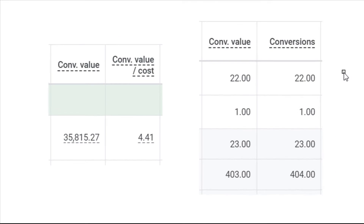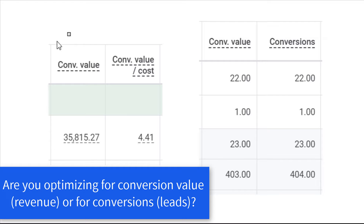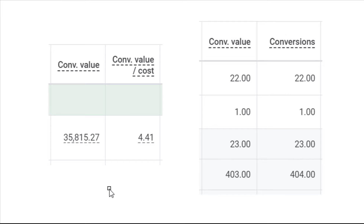First things first, when you set up your conversion tracking, you're either going to have a conversion value attached to your conversion — basically what is your return on ad spend — or every single conversion is going to count as one for your business. So basically, are you driving purchases or are you driving leads? If you're driving direct revenue with a conversion value attached, for example a Shopify e-commerce website selling products or course materials, then you'd have a conversion value attached to each individual conversion. The other case is a company that drives leads — a local service business, phone calls, form fills, appointments — which will generally have a conversion value of one attached to each conversion.